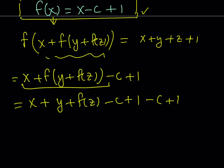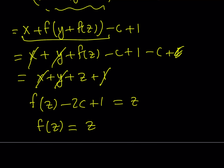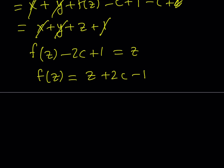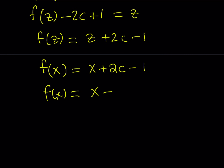Setting that equal to the right hand side x plus y plus z plus 1, we can cancel out x and y and one of the ones. This gives us f of z minus 2c plus 1 equals z. Isolating f of z, we get f of z equals z plus 2c minus 1. This is another definition for f, but in terms of z — and since f is continuous everywhere, we can replace z with x to get f of x equals x plus 2c minus 1.